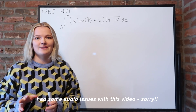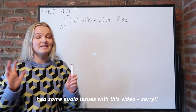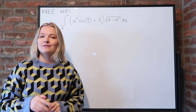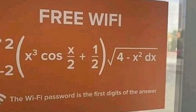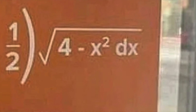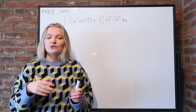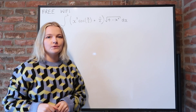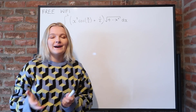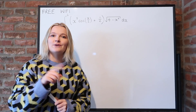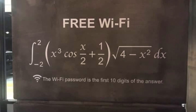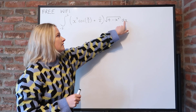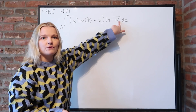Two things stood out to me when I came across this 'solve this integral to gain free Wi-Fi' puzzle. The first was the fact that the dx was inside the square root, and the other was that it said just find the first digits of the number you get from this integral for your Wi-Fi password. I've seen other versions where some say the first five digits, and some actually include the dx outside the square root as it should be.